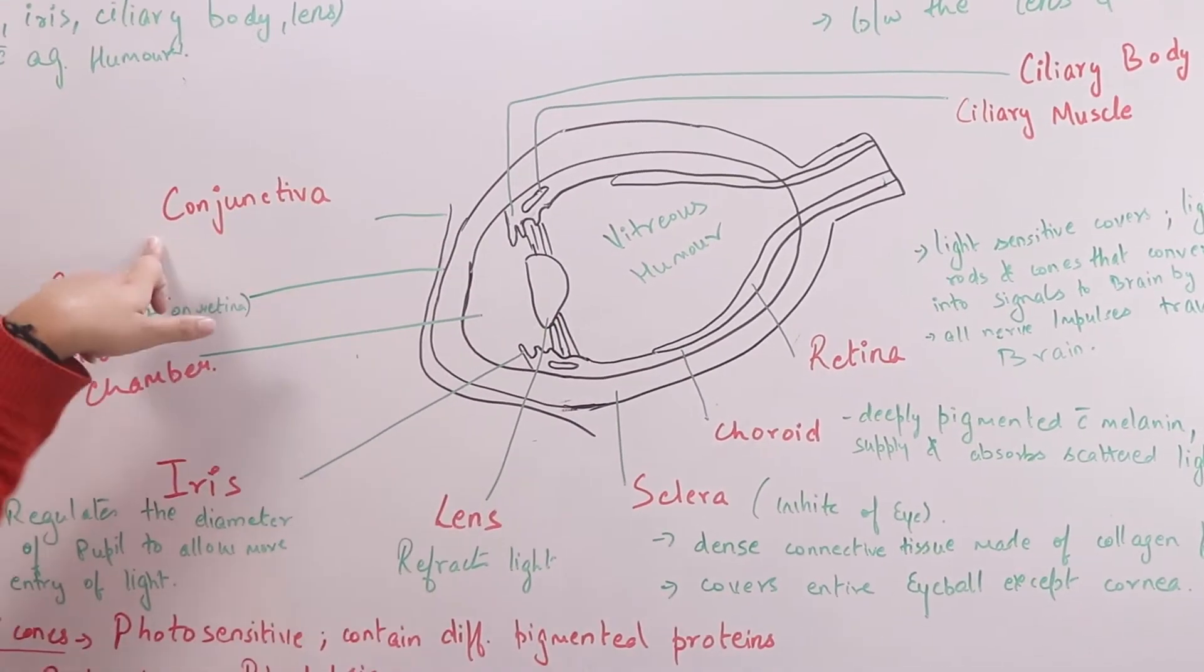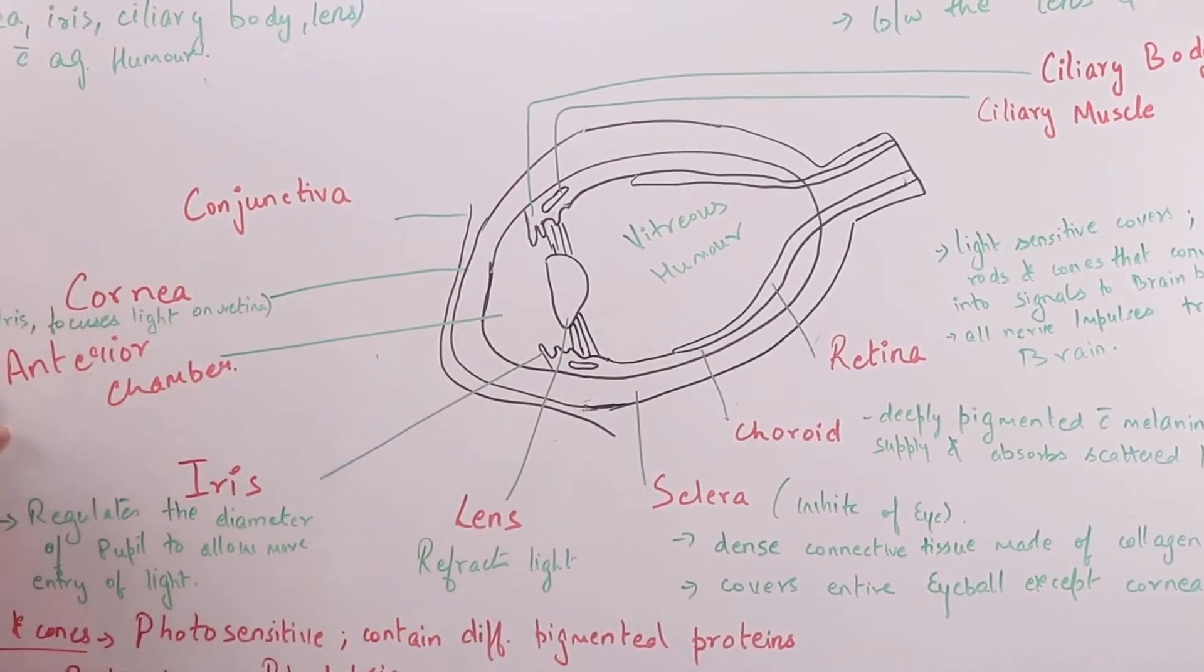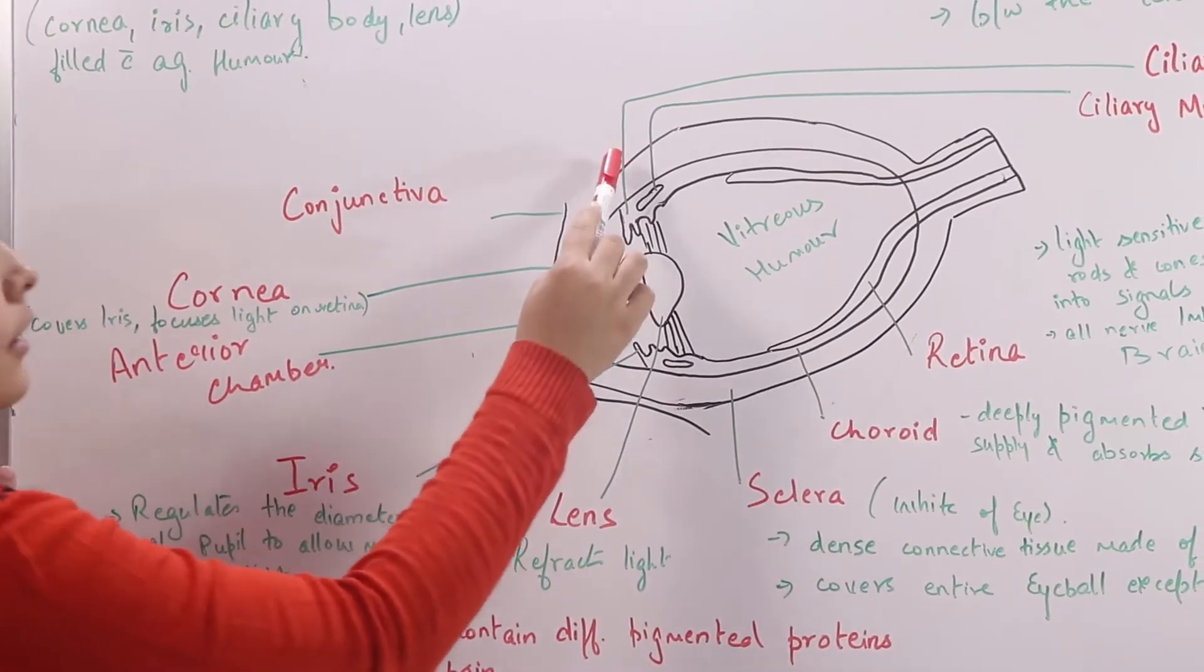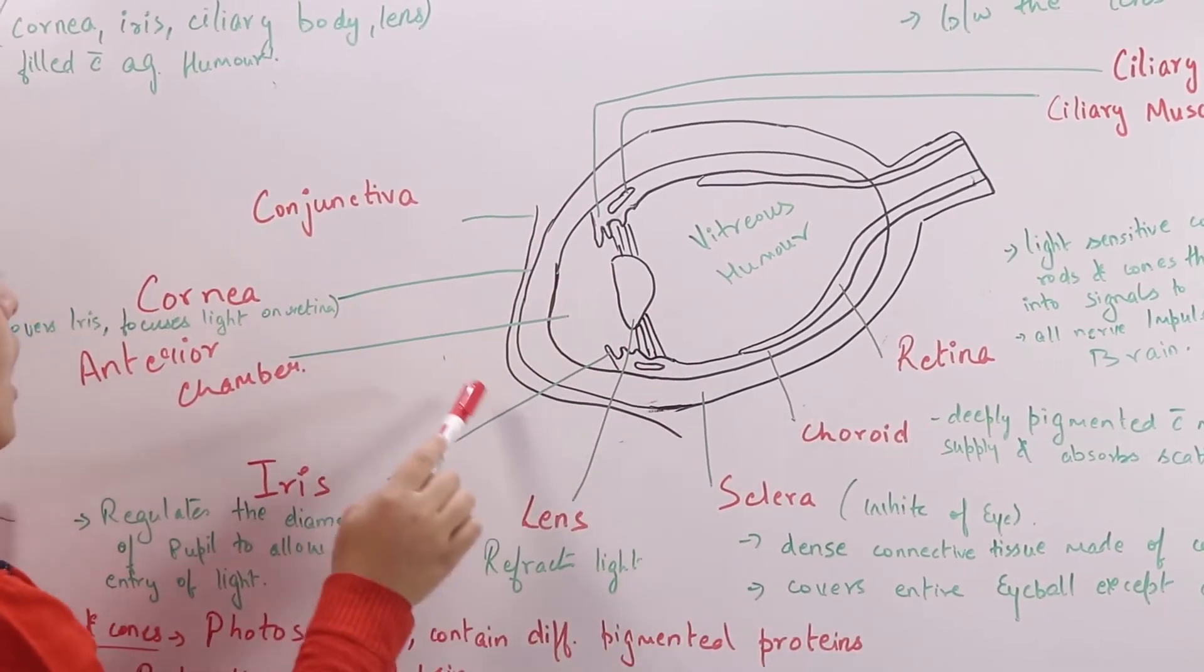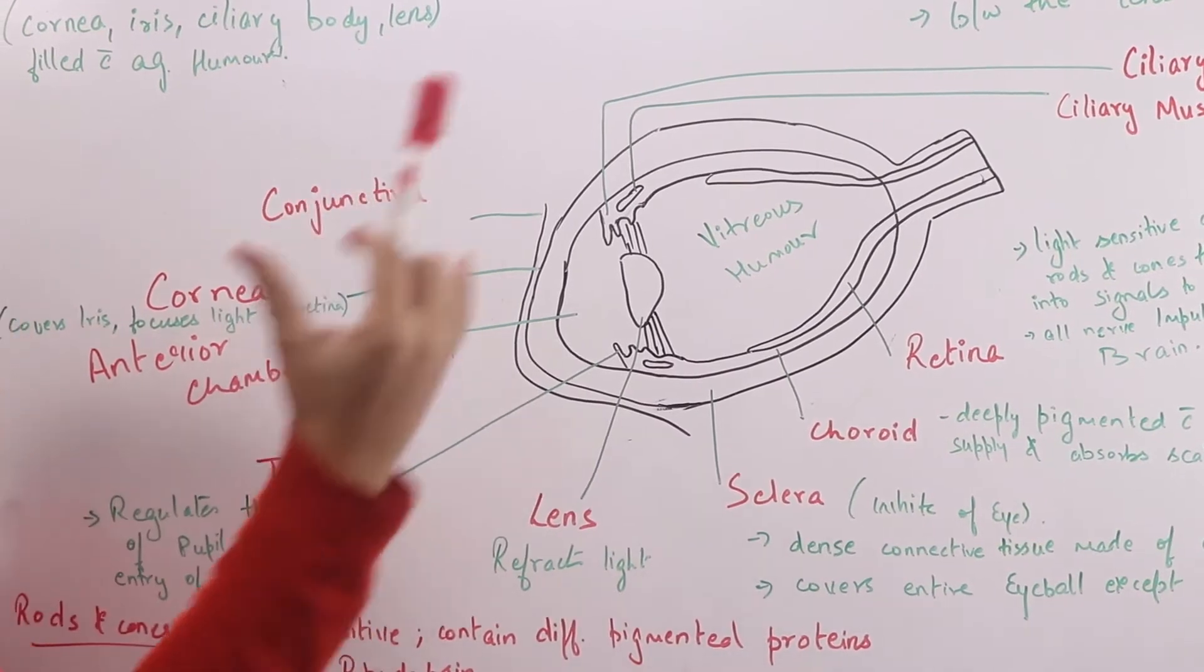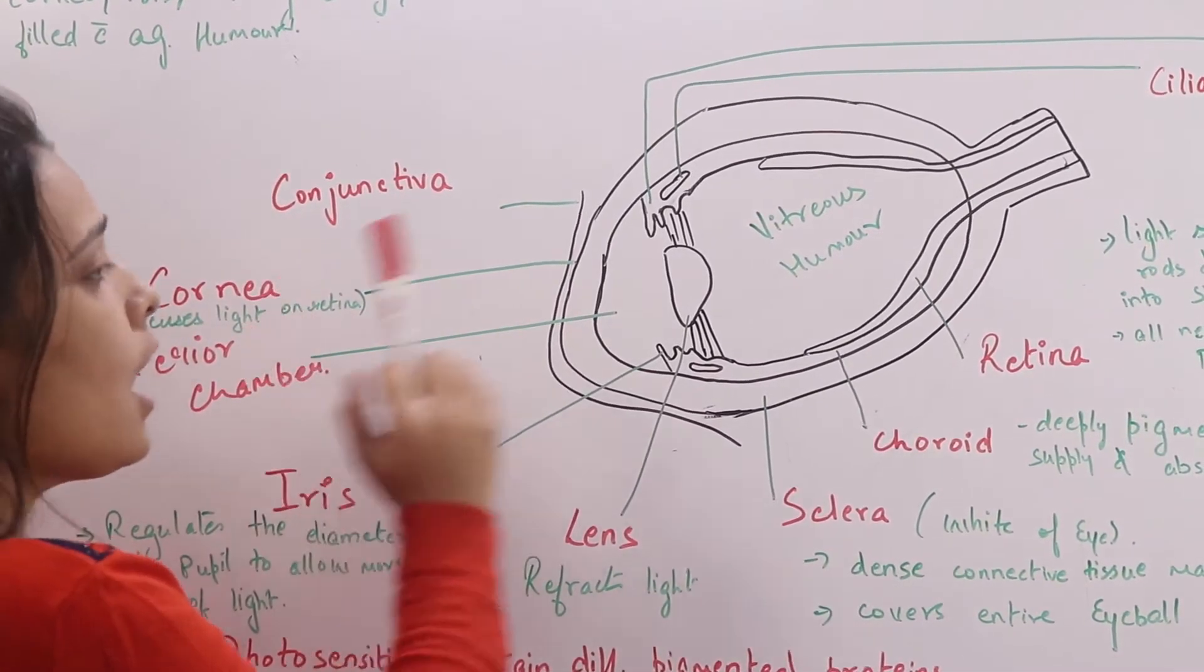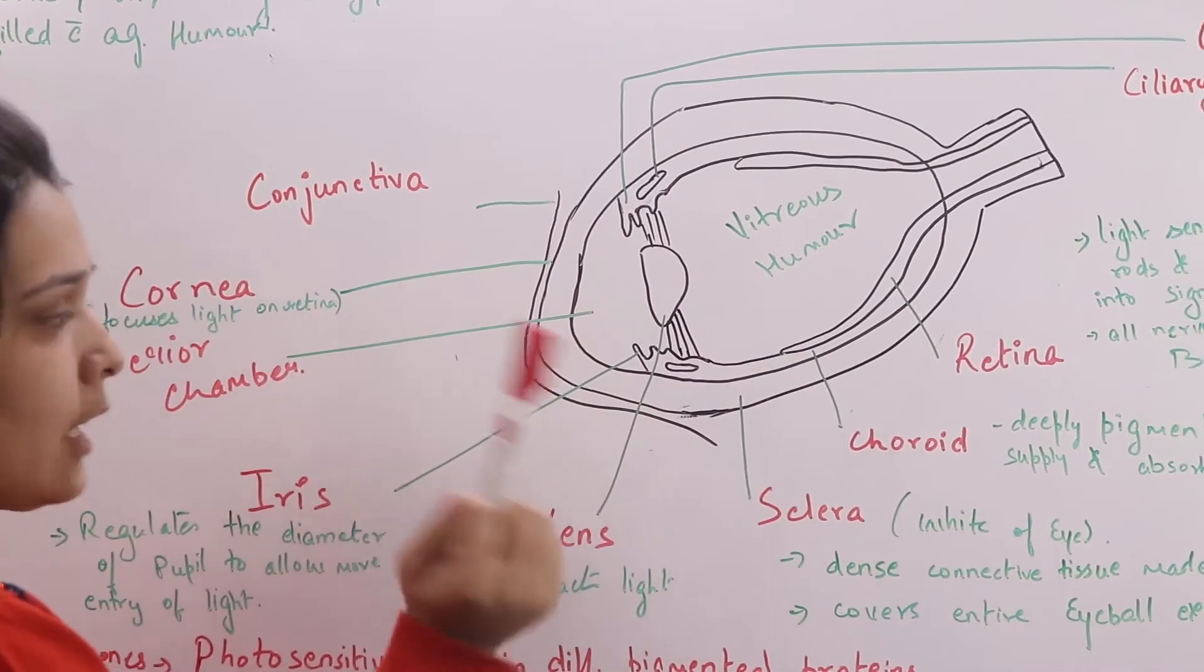In the anterior segment, first we have our conjunctiva, second is our cornea. The cornea covers our eyes, and the light which comes to our eyes focuses on the retina through the cornea.